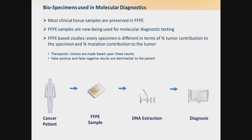The thing with FFPE samples, though, is that they vary in terms of how much tumor versus healthy tissue is present and how much any one mutation contributes to the tumor. And since therapeutic decisions are based upon these results, any false negatives or positives can be detrimental to the patient.